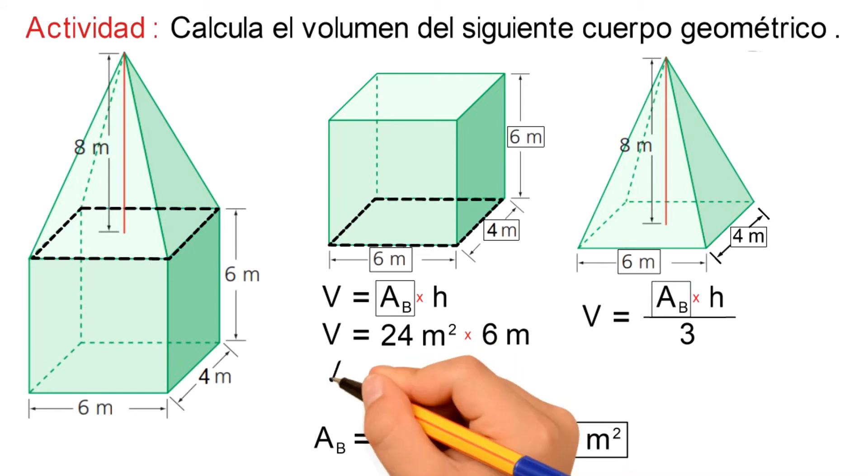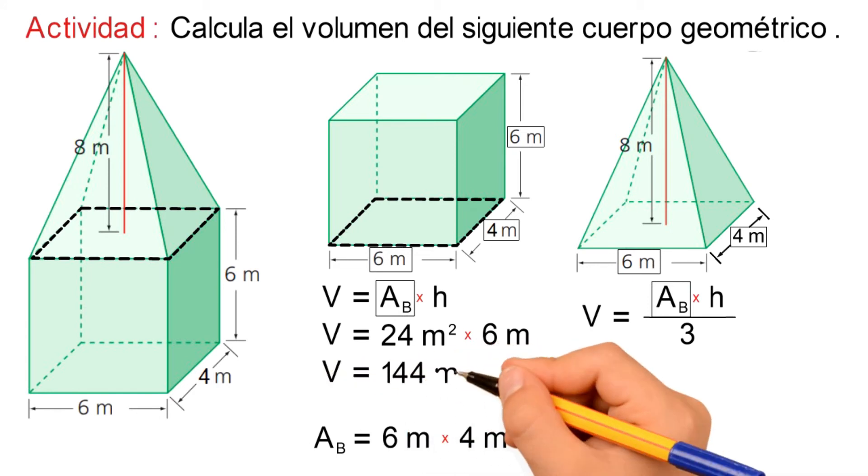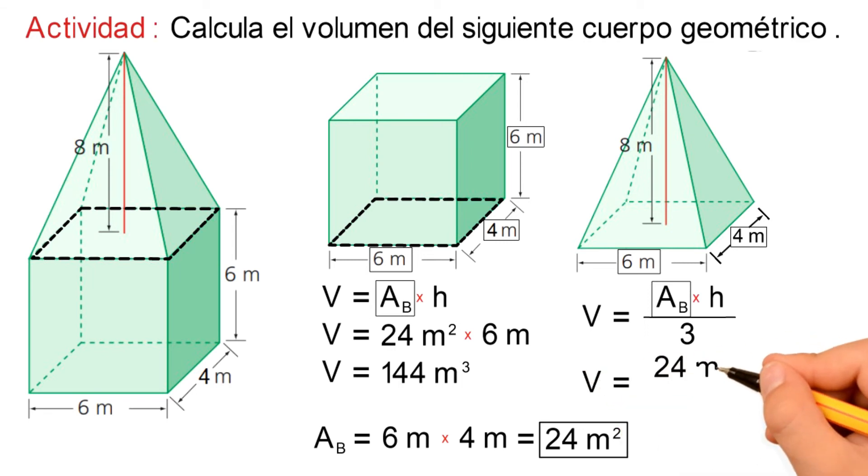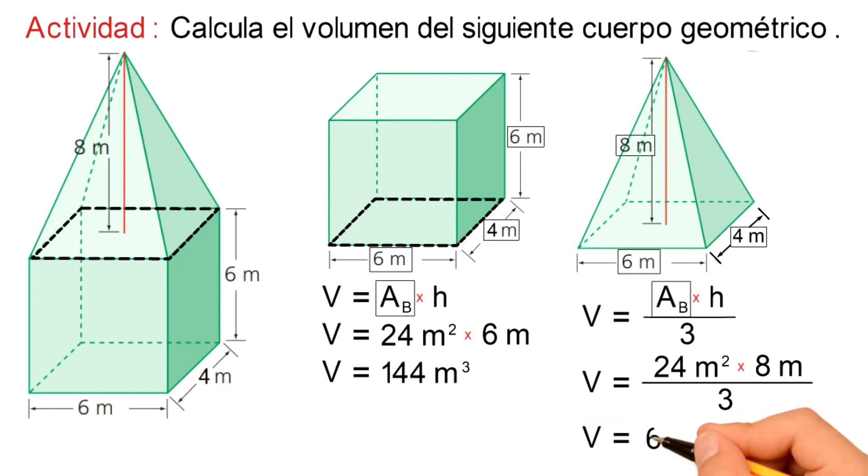Ahora para la pirámide, reemplazando en su fórmula tenemos 24 metros al cuadrado multiplicado por su altura, que es 8 metros dividido para 3. Y resolviendo las operaciones, esto nos quedaría 64 metros cúbicos.